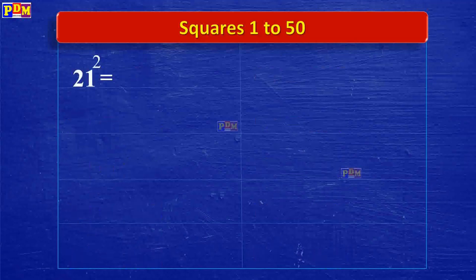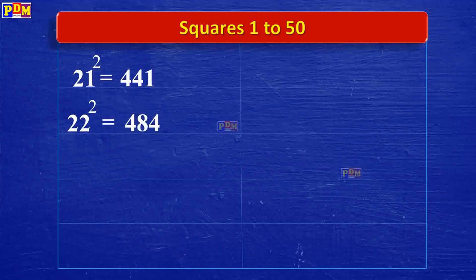21 squared is 441. 22 squared is 484. 23 squared is 529.